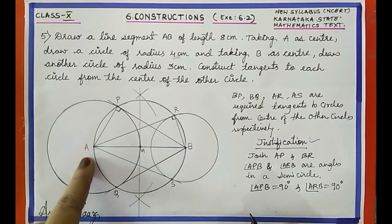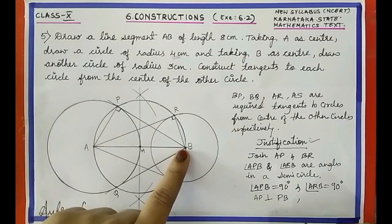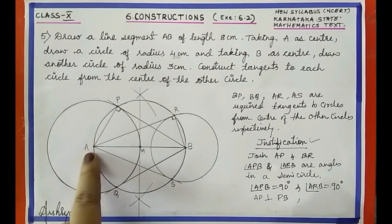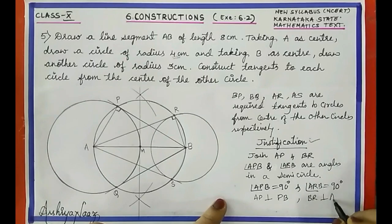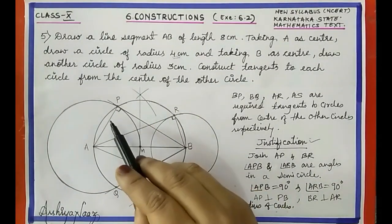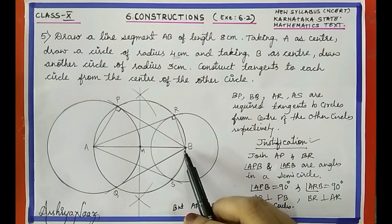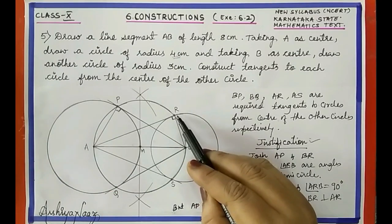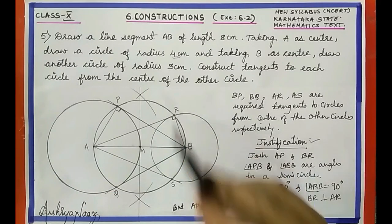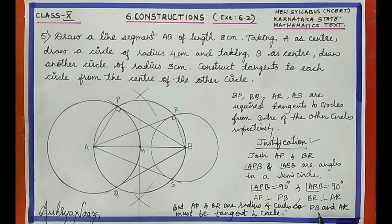Since angle APB equals 90 degrees, AP is perpendicular to PB. Since angle ARB equals 90 degrees, BR is perpendicular to AR. Now AP and BR are radii of their respective circles. A line perpendicular to the end of a radius on the circle must be a tangent. Therefore PB is a tangent to the first circle and AR is a tangent to the second circle. Similarly, AS and BQ are also tangents to their respective circles.